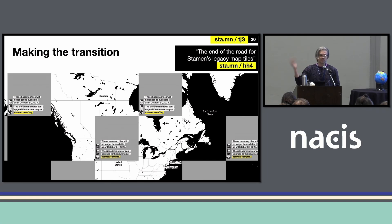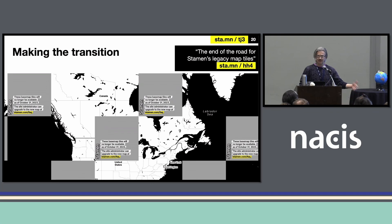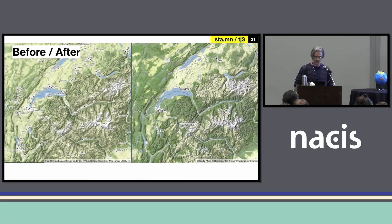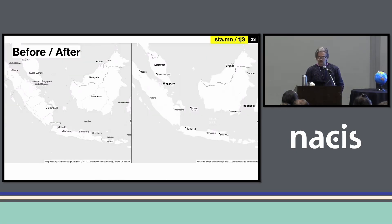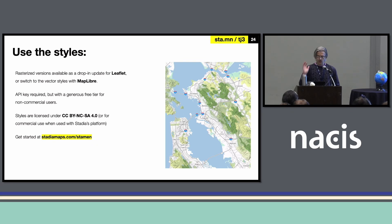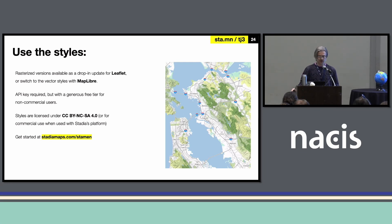People had been using this stuff for 10 years — someone had written an app 10 years ago using our tiles and forgot about it, just like we forgot about it. We had to gradually start slipping in little error tiles to tell people they need to go and update. You can use all of this now — you can go to Stadia Maps. You have to use an API key now, but they have a very generous free tier and a very generous tier for educational and nonprofit uses.